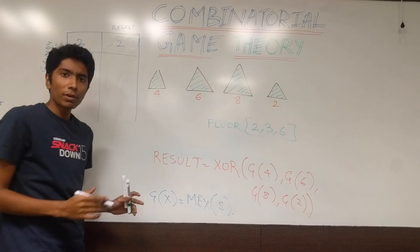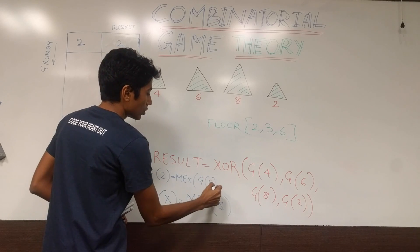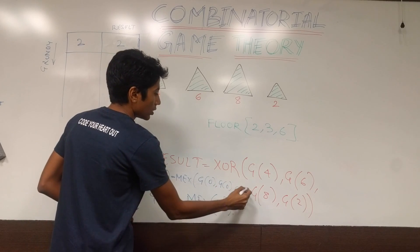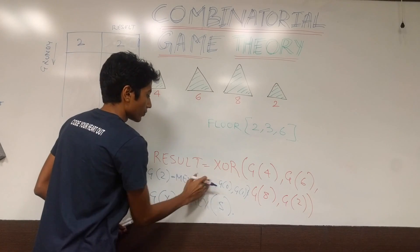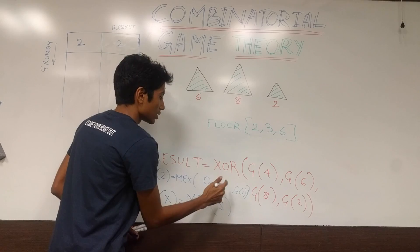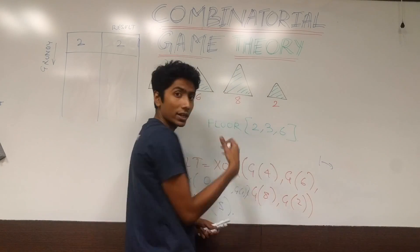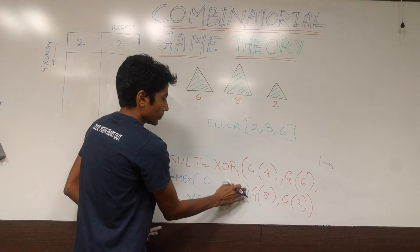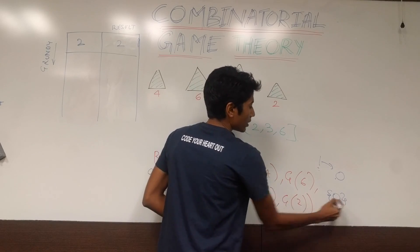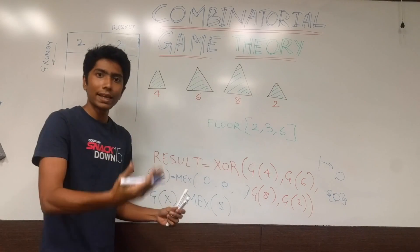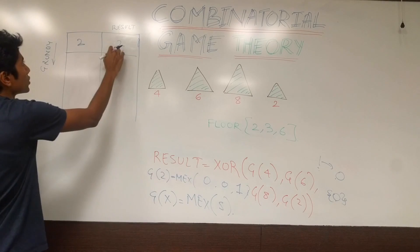To be precise, Grundy(2) = mex of {Grundy(0), Grundy(0), Grundy(1)}. Grundy(0) = 0 because there are no moves from 0. Grundy(1): dividing by 2, 3, or 6 all give 0, so from 1 you can only go to 0. Mex of {0} = 1, so Grundy(1) = 1. Therefore mex of {0, 0, 1} = 2. Grundy(2) = 2.